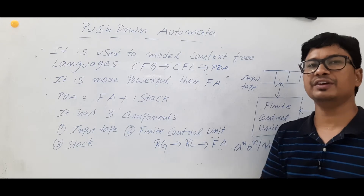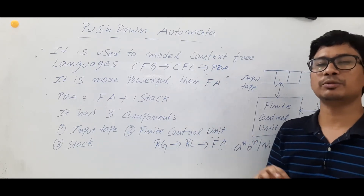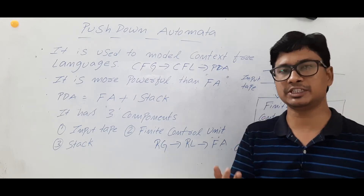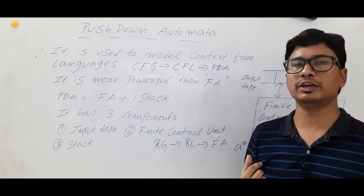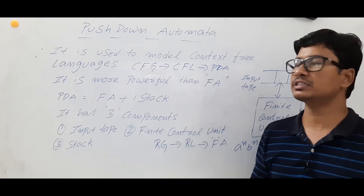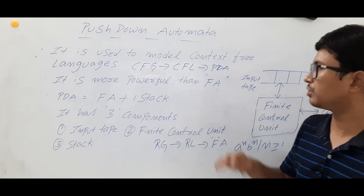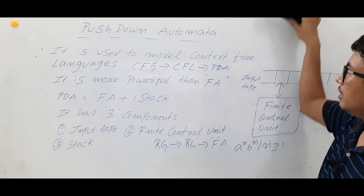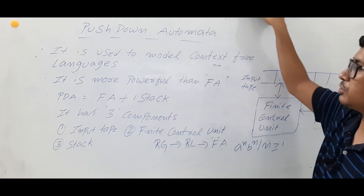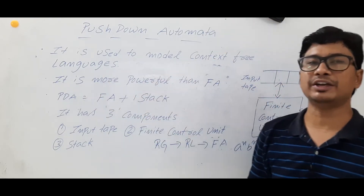Just as finite automata have NFA, DFA, and epsilon-NFA, similarly pushdown automata also have two types: one is deterministic pushdown automata and non-deterministic pushdown automata. In the next video we will discuss about what is the difference between deterministic and non-deterministic pushdown automata. Now we will discuss about the introduction related to the pushdown automata.